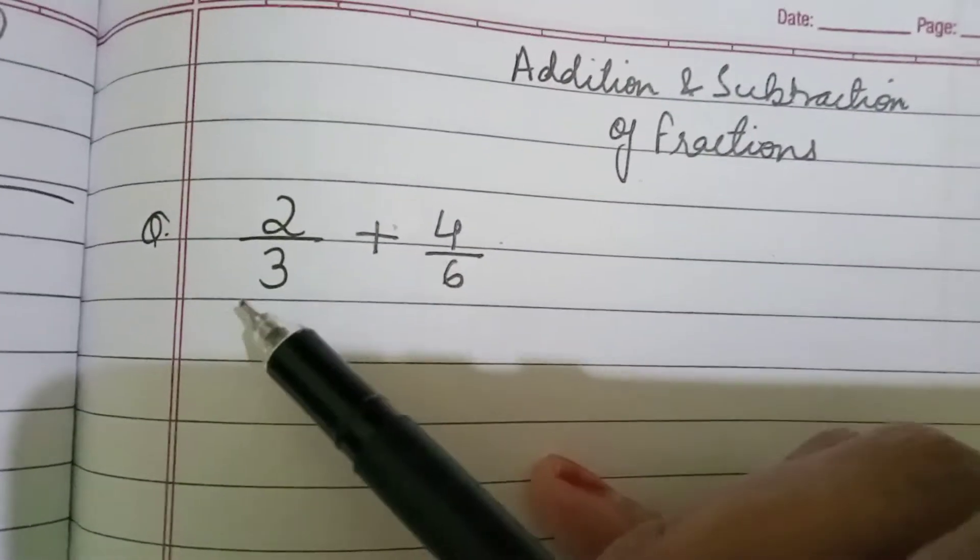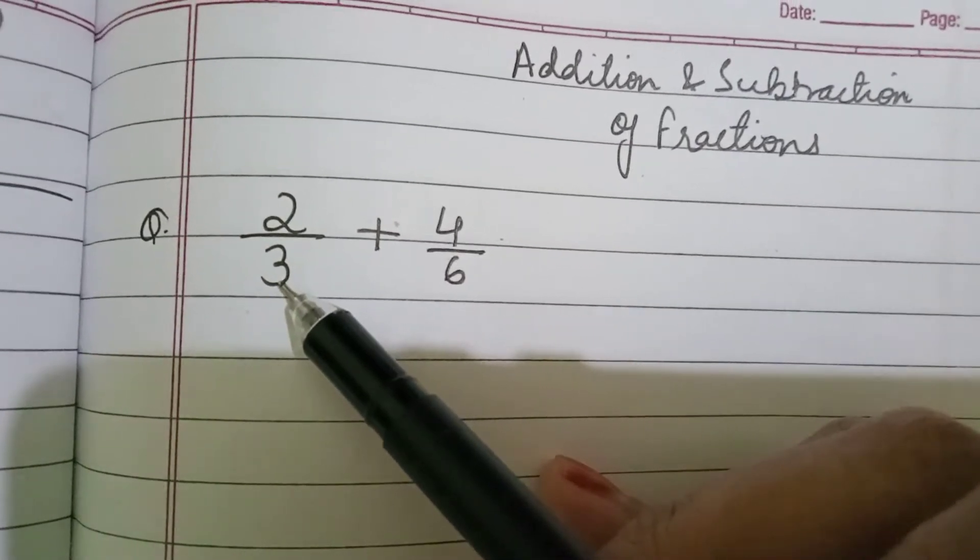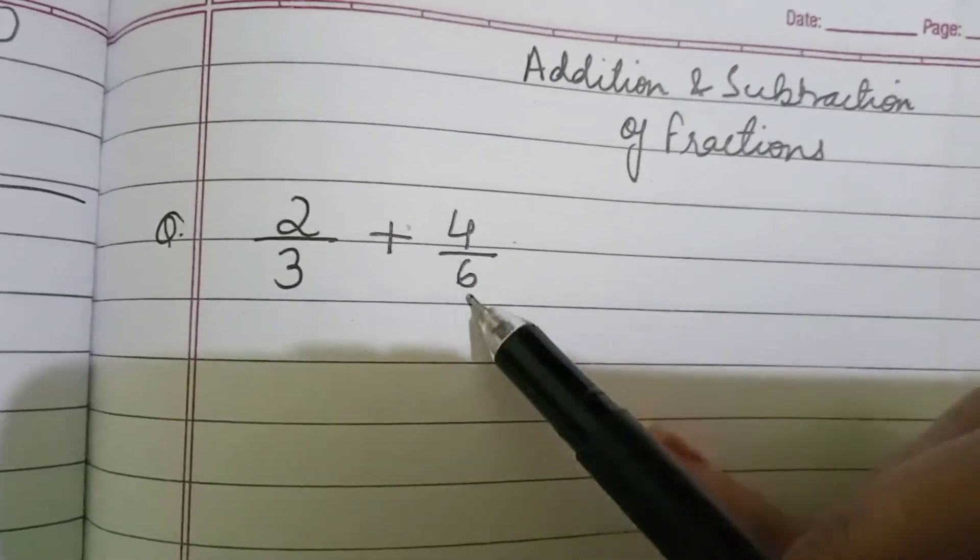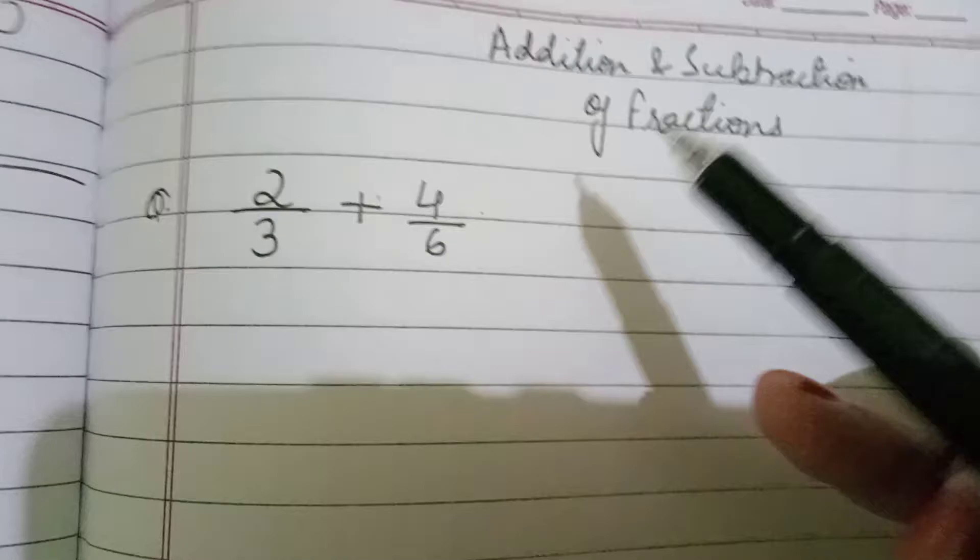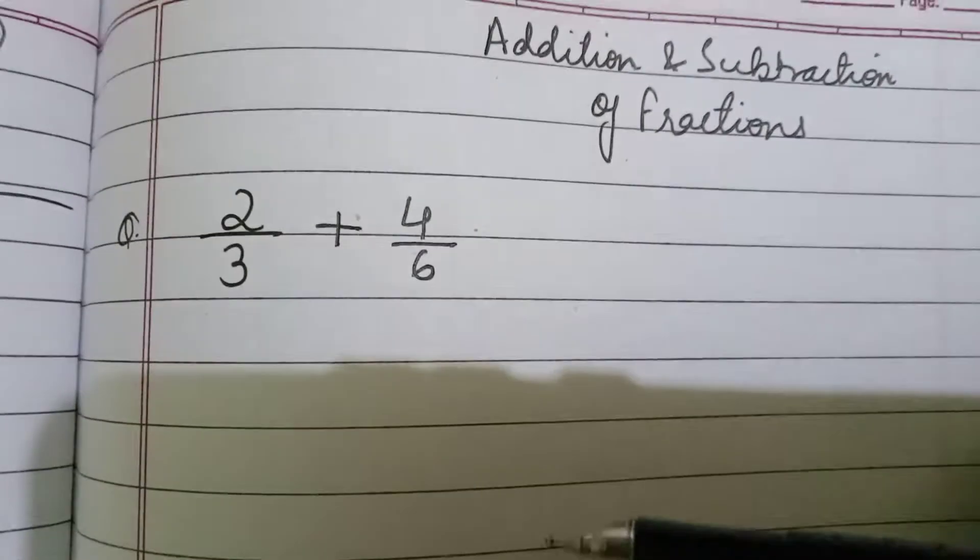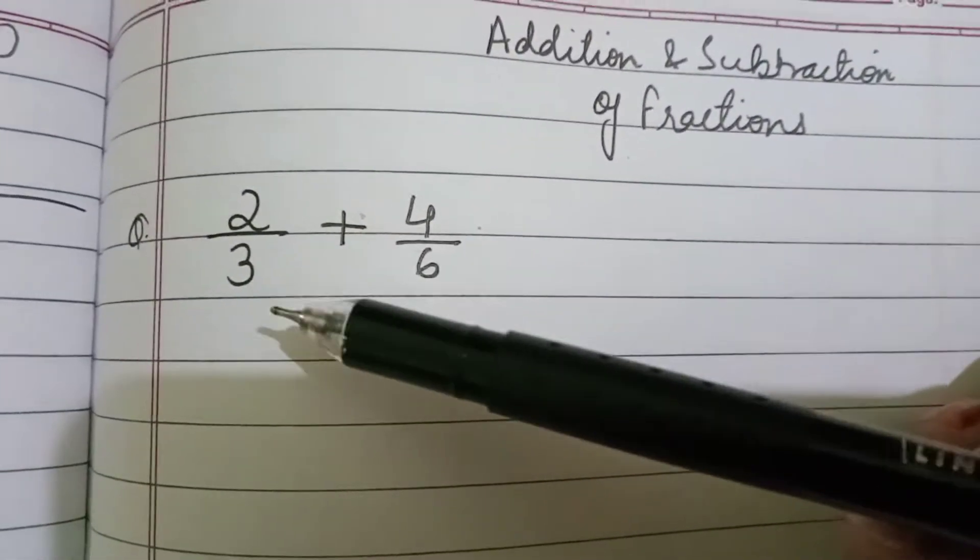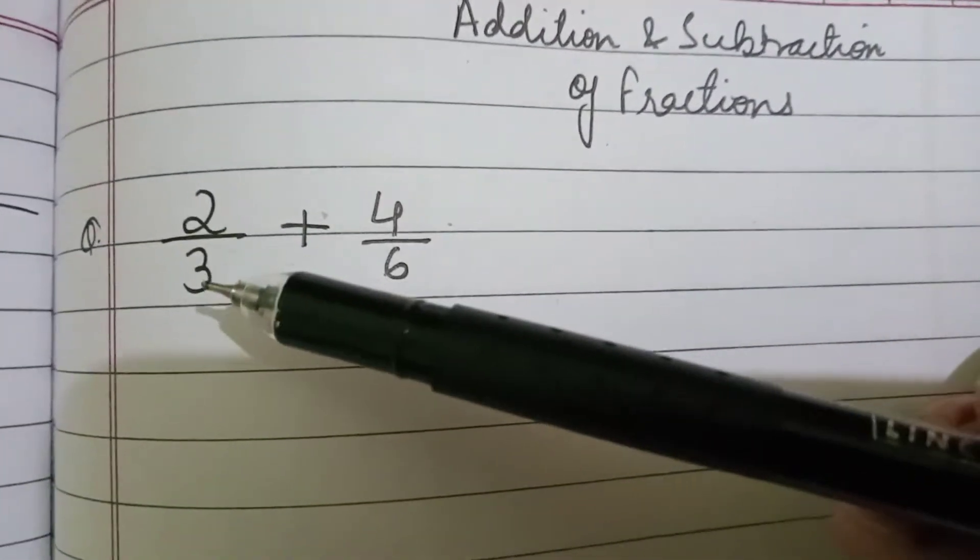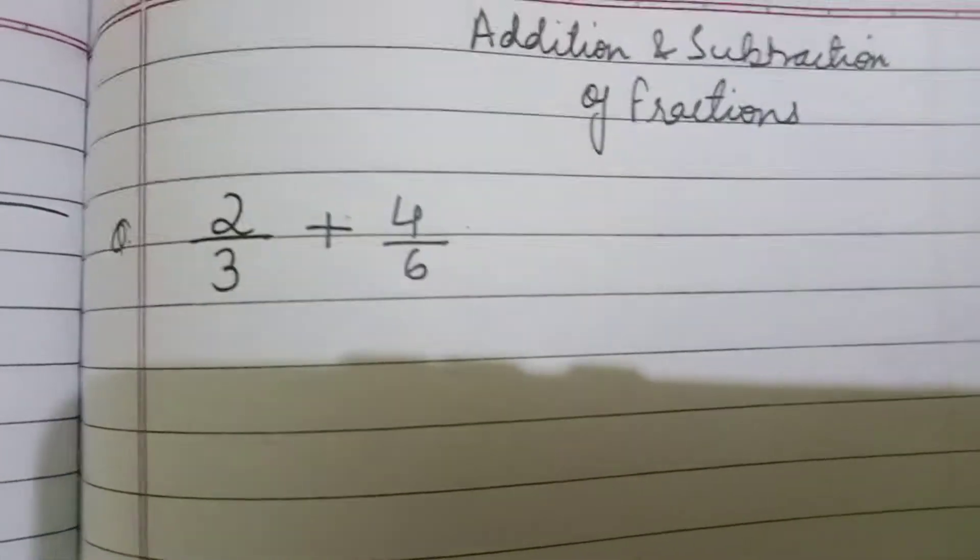So it should be same. Whatever the denominator is here, it should be same. That means the denominator should be same, and that is known as like fractions. Like fractions where we have the same denominator. And this is unlike fractions because the denominators are different.